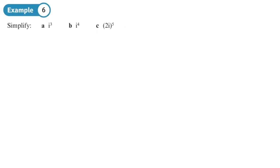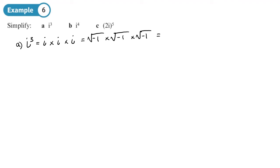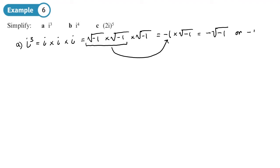Let's simplify these. First, i cubed: i × i × i, which is √(−1) × √(−1) × √(−1). Doing the first two: √(−1) × √(−1) = −1. Then −1 × √(−1) gives negative √(−1), which we can write as −i, since √(−1) = i.